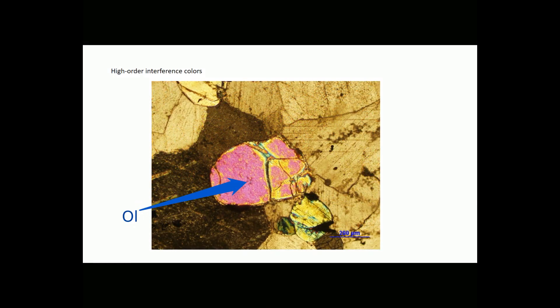The grain in the middle of this view is olivine, which has slightly greater birefringence than epidote. Olivine also has no cleavage, although you can see some fractures in this grain. Below and to the right of the olivine, there is a grain of pyroxene. This grain shows cleavage, which is one way we can sometimes tell olivine from pyroxene in thin section.